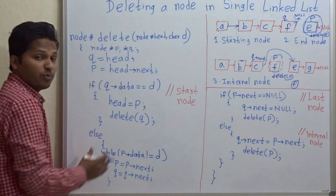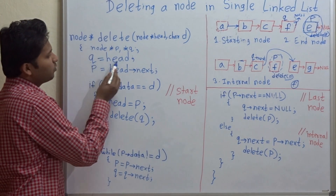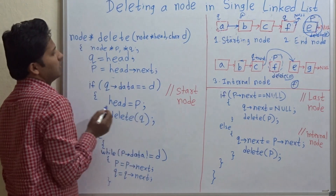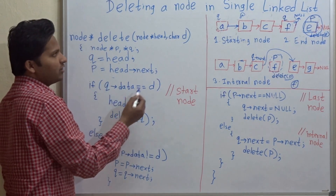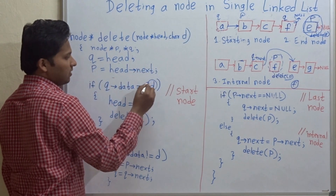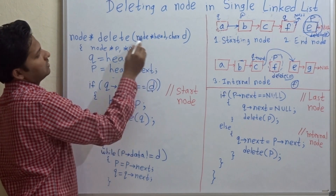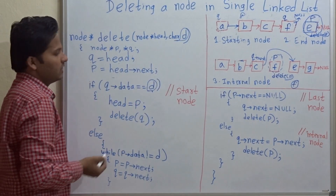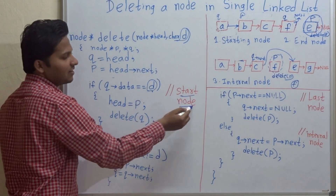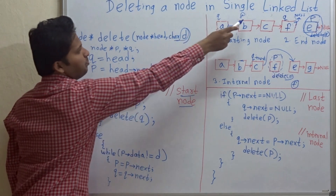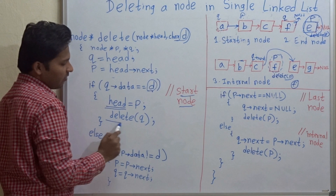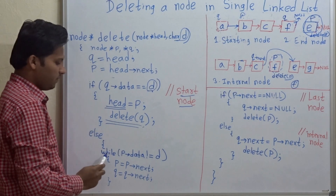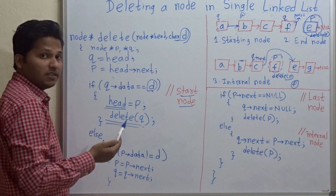Let's see the code. Q is pointing to head and P is pointing to next of head. In the function node-star delete, D is the deleting node's data. If Q's data equals D, that means it is the start node, so we make P the new head and then delete Q.